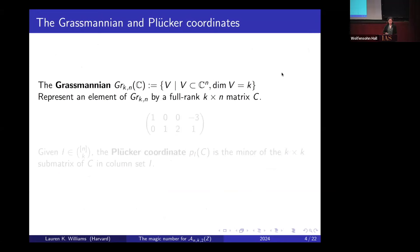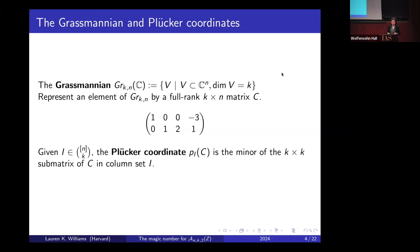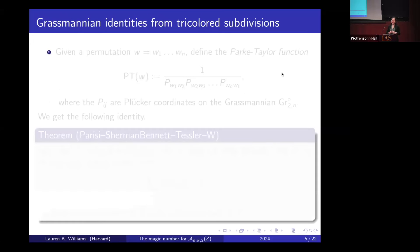Let me remind you of the definition of the Grassmannian. The Grassmannian G(k,n) is the set of all k-dimensional subspaces of an n-dimensional vector space; I'll represent elements by full rank k-by-n matrices. Our Plücker coordinates are the maximal minors of these matrices: if I is a k-element subset of {1,...,n}, the Plücker coordinate p_I is the minor of the k-by-k submatrix of C in columns I.